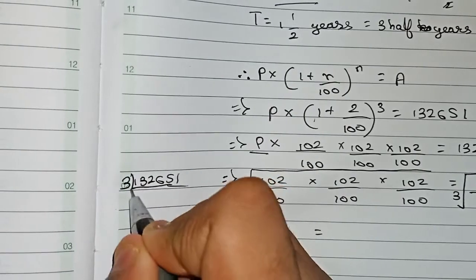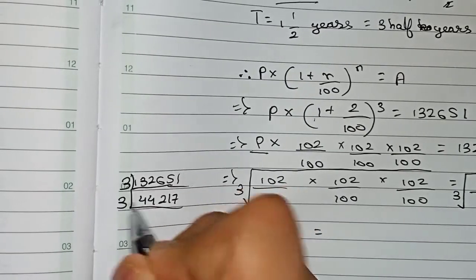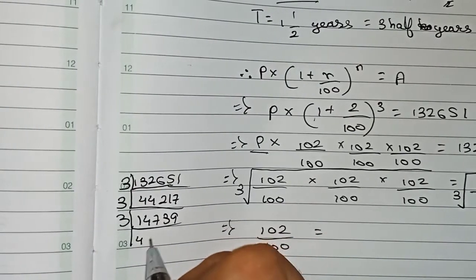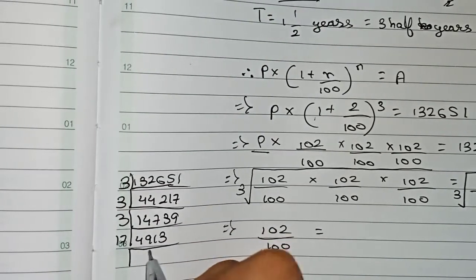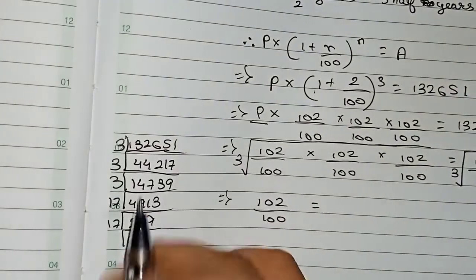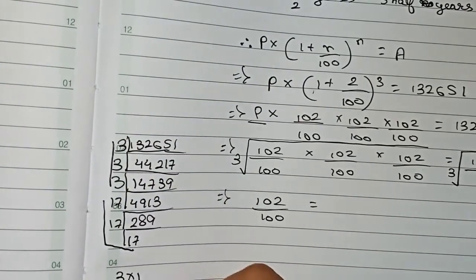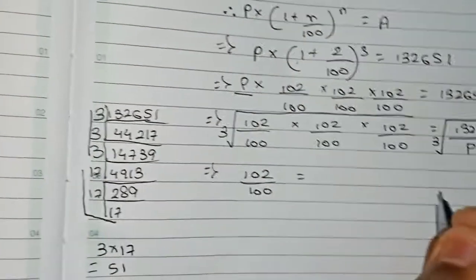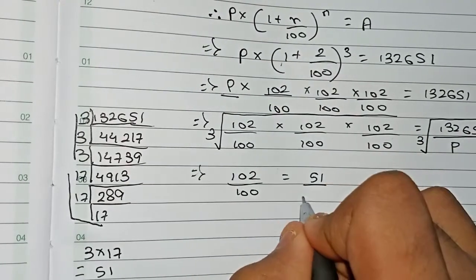To find the cube root of 1,33,651: dividing by 3 gives 44,217; dividing again by 3 gives 14,739; dividing again by 3 gives 4,913. Now dividing by 17 gives 289, and 289 divided by 17 gives 17. So the prime factors give pairs: 3 × 17 = 51. Therefore the cube root of 1,33,651 is 51.